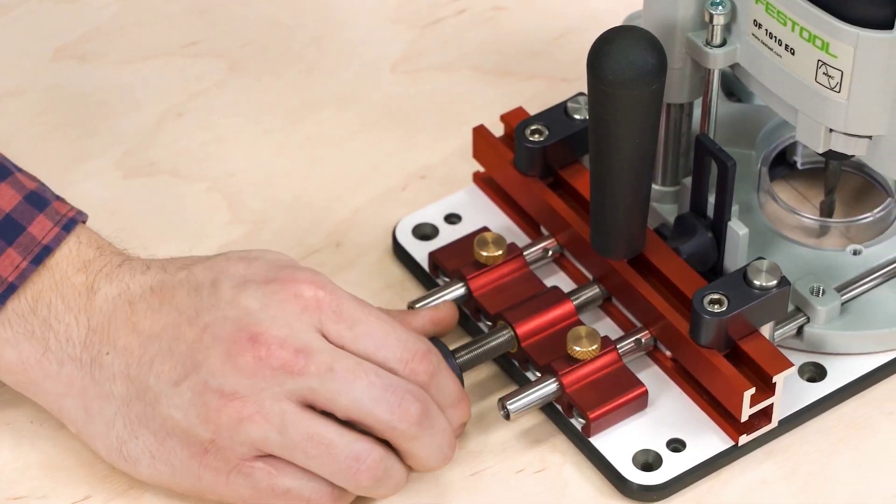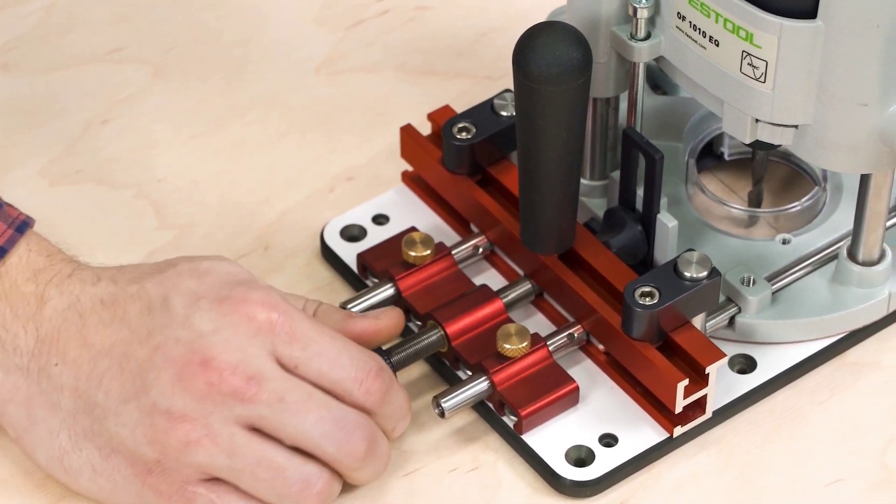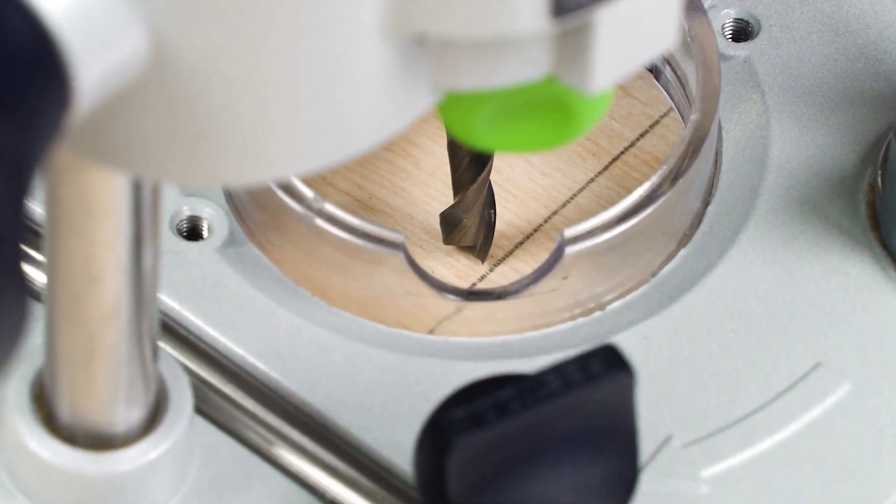But I still haven't shown you the coolest feature of the Multi-Function Router Base. Just reach for the Micro-Adjuster and dial your router into exactly the right position for your cut.